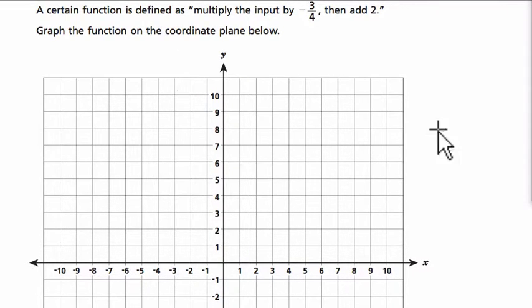Okay, let's read it. A certain function or equation is defined as: multiply the input by negative 3 fourths and add 2. So x is our input, right? x times negative 3 fourths, and then add 2. And this is our output. So we have a linear equation.